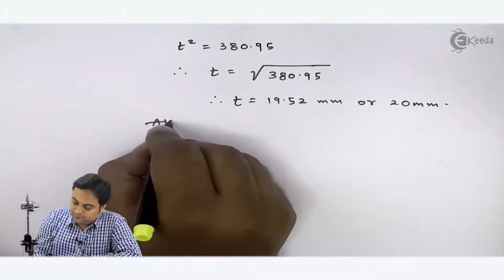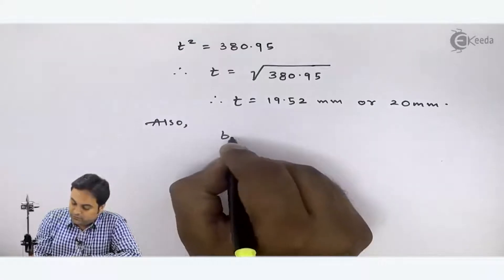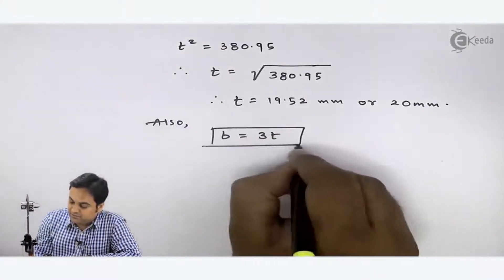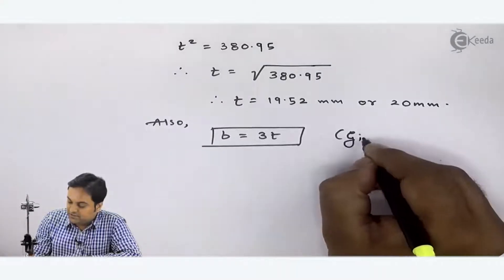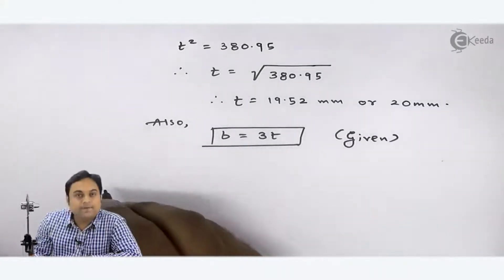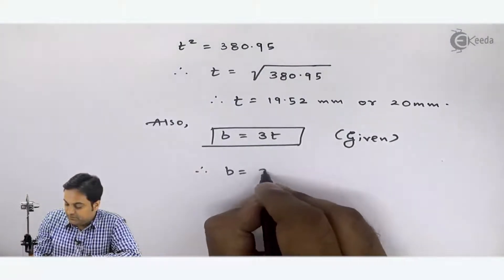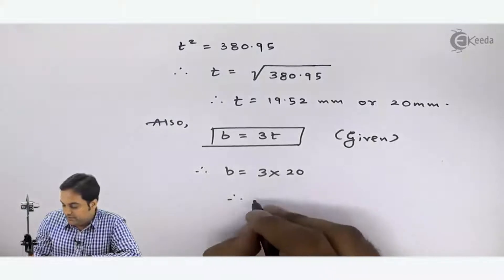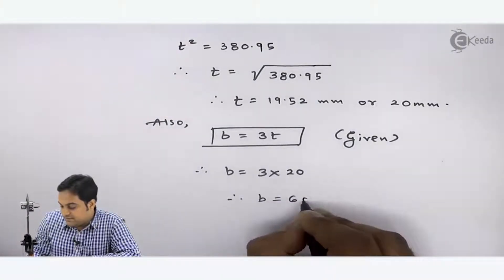Now you can say also, small B is equal to 3 times of T. Means width is equal to thrice of thickness. If I calculate this, therefore B is equal to 3 × 20. So B's answer is 60 mm.